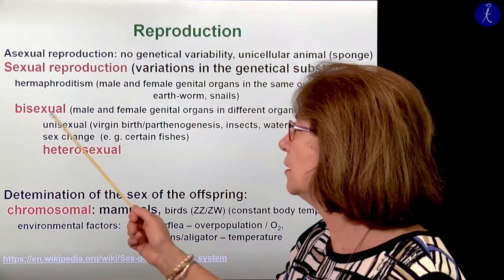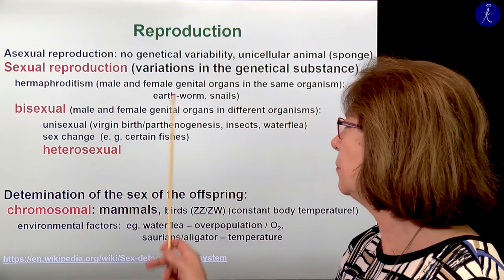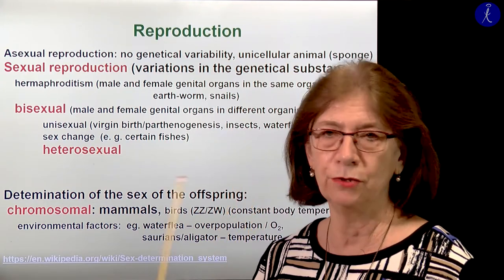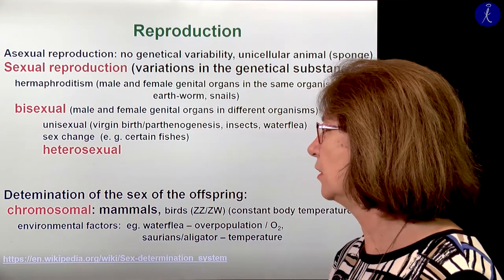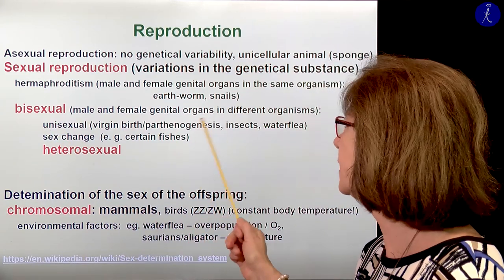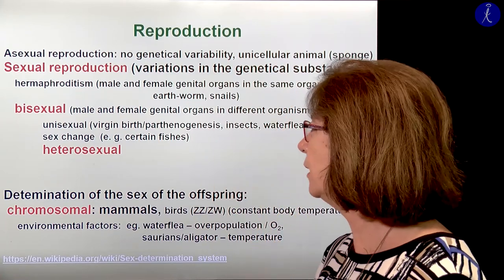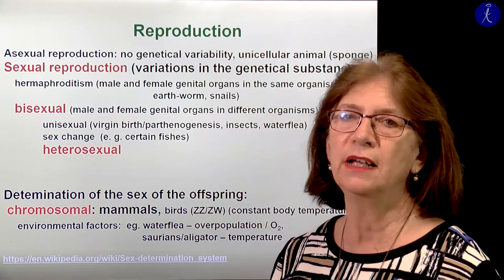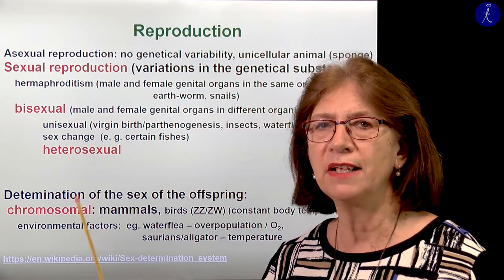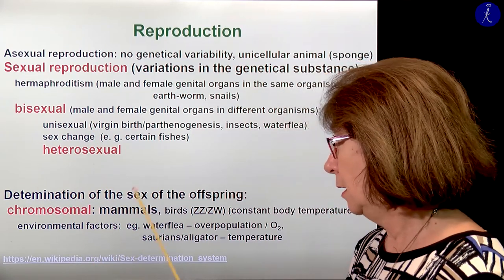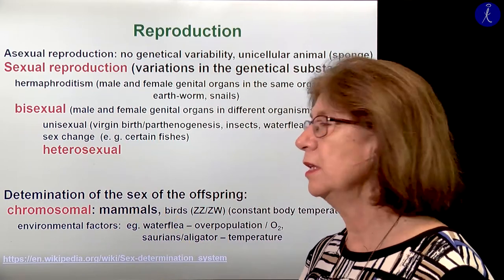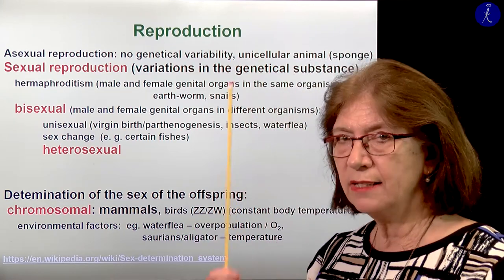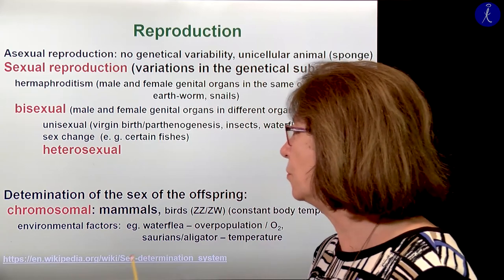And there is the bisexual way of reproduction, where the male and female genital organs are in different organisms. But even then, not all animals make it like humans do. There may be unisexual reproduction, or virgin birth — parthenogenesis. This happens in some insects, like also in the water flea. Or there are some creatures like fish, for example, which may change their sex during their life — from male to female, from female to male again. Humans and also mammals do heterosexual reproduction. In this case you need a male and a female gamete to fertilize each other, and that makes a new living being.